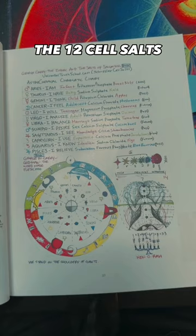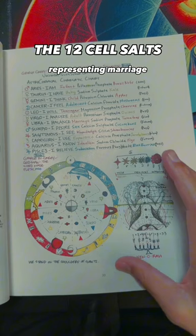September 23rd to October 22nd belongs to Libra, which is the two kidneys representing marriage and its corresponding cell salt is sodium phosphate, which can be found in cherry tomatoes.